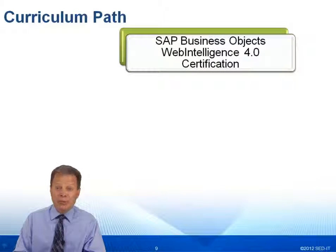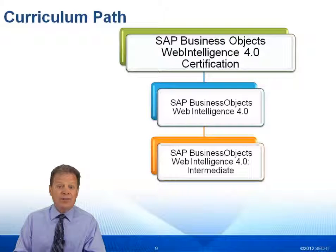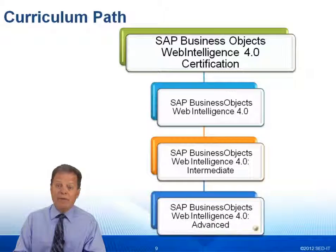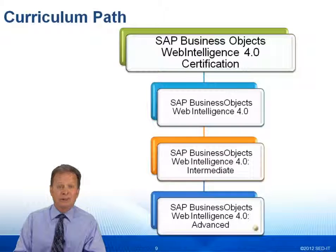The curriculum path would normally be: you would come through the Business Objects Web Intelligence 4.0 process by first taking the basic course, then taking the intermediate course, which you're currently now signed up for. The logical next step from there would be to take the advanced course and get into some of the more truly advanced topics that comprise the Web Intelligence reporting tool, version 4.0.